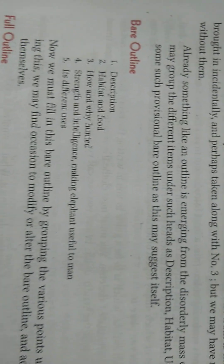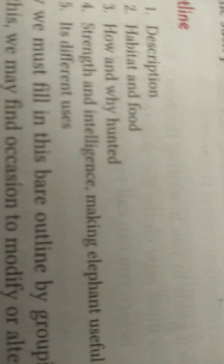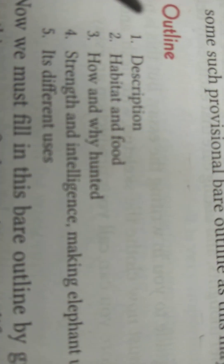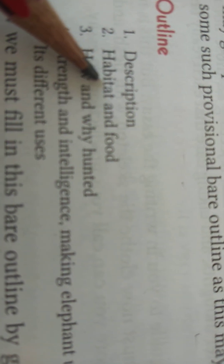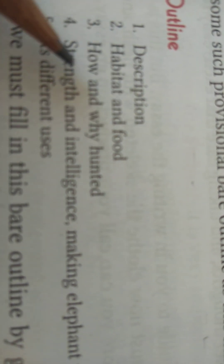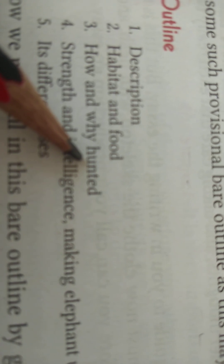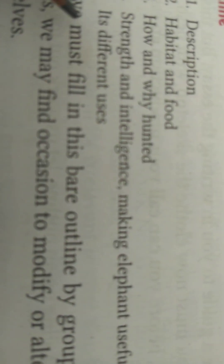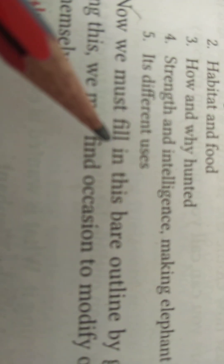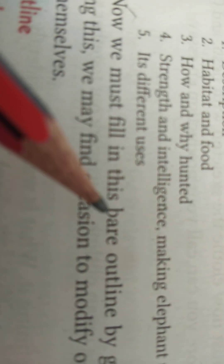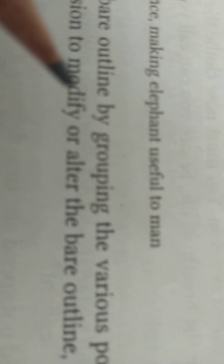So what we need to write when we will write an essay: first, description; second, habitat; third, how and why hunted; fourth, strength and intelligence making the elephant useful to man; fifth, its different uses.